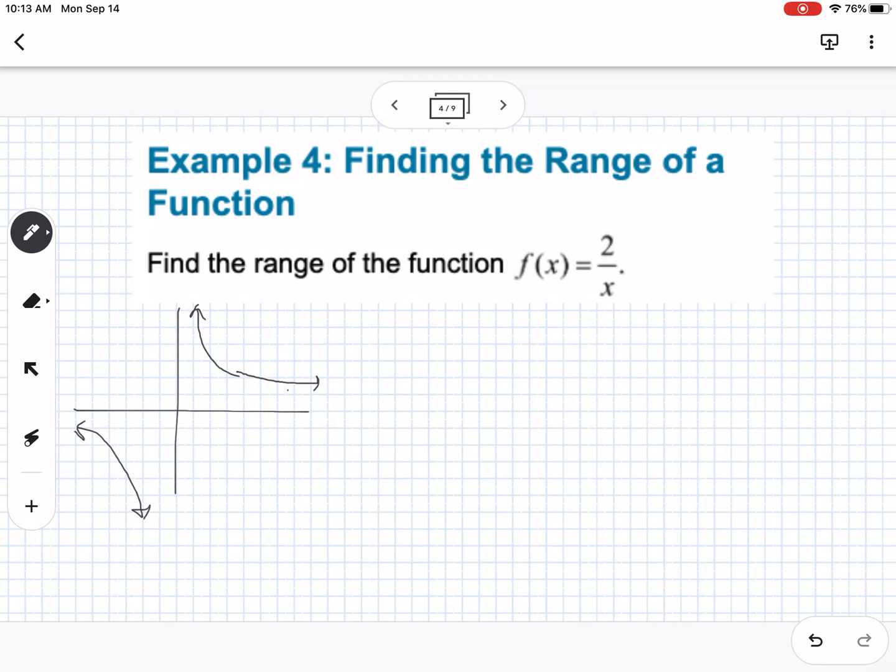So we want to know what are the y values. So if we're thinking of this, our graph's going to go to negative infinity and positive infinity in the y direction, but we know that it's going to get closer and closer and closer to zero, but it's never going to touch zero. So that means that it can't be zero, but it can be any other y value. So our range for this, this again is y values, and we're talking about range. So our range would be negative infinity to zero with a curved bracket, and then zero to infinity.